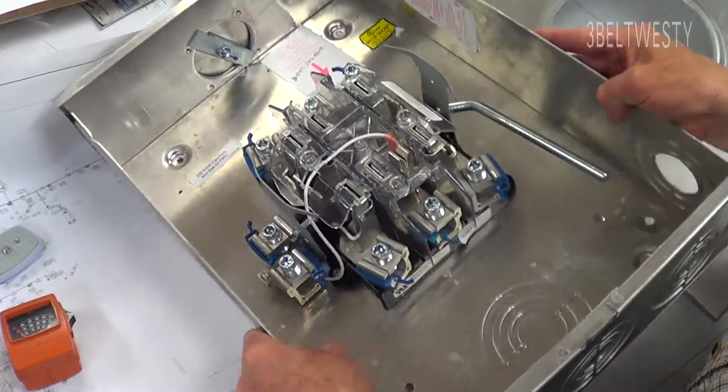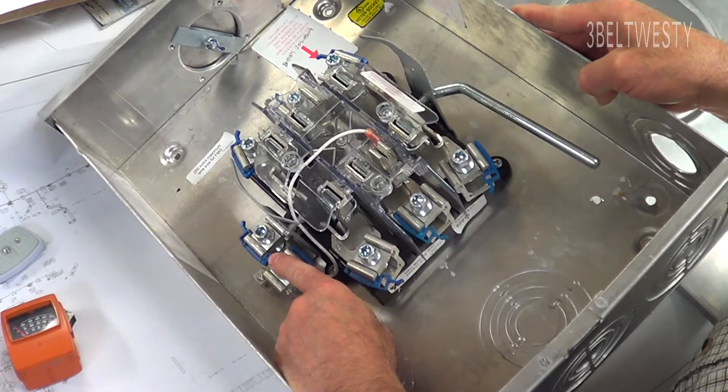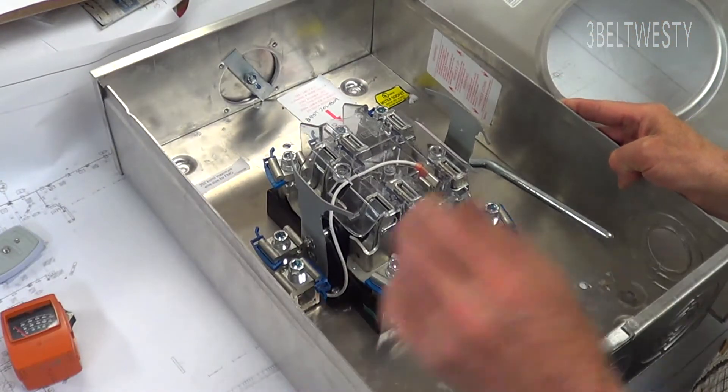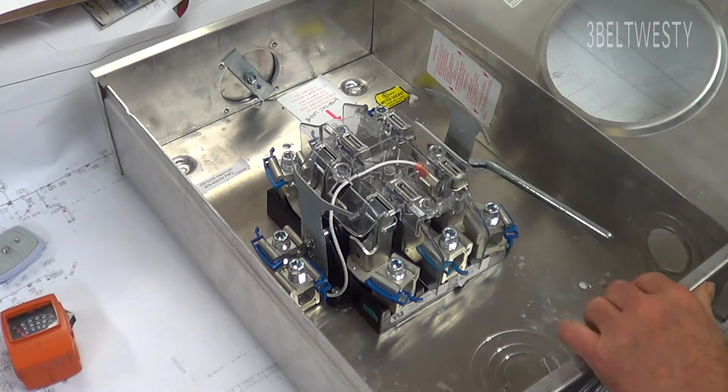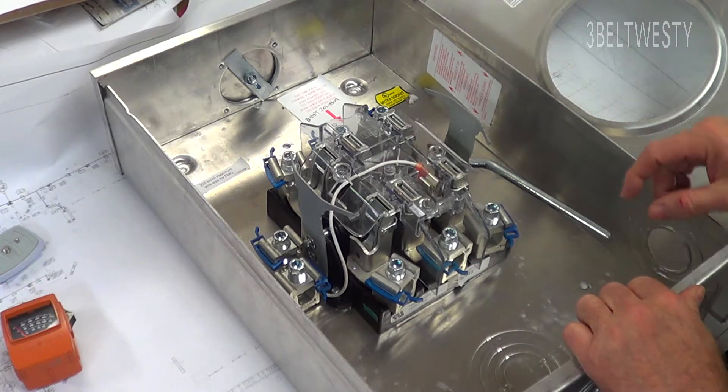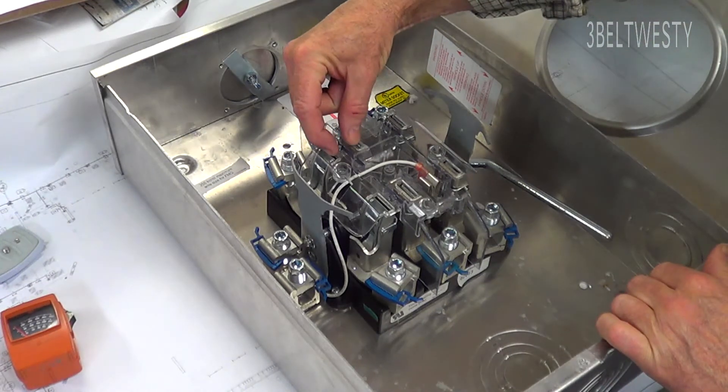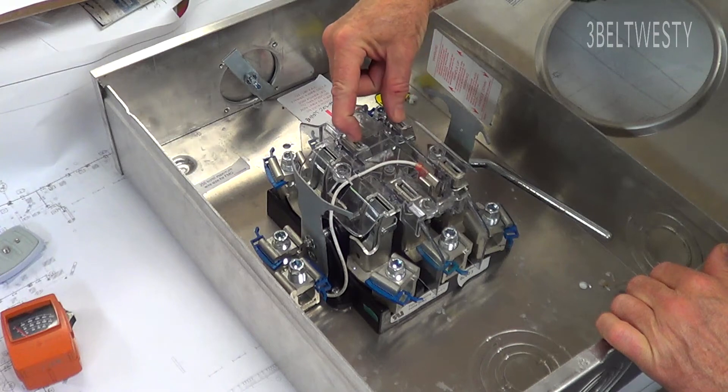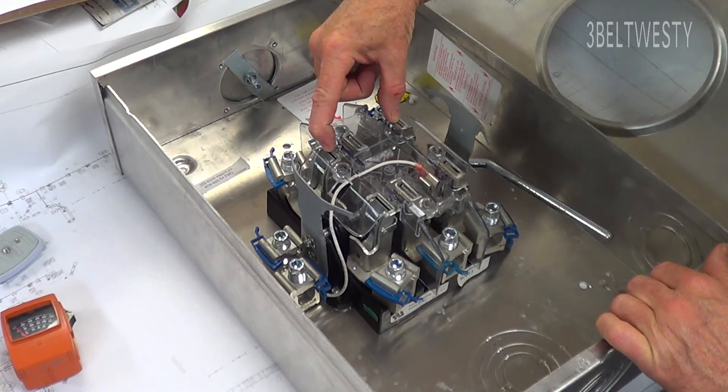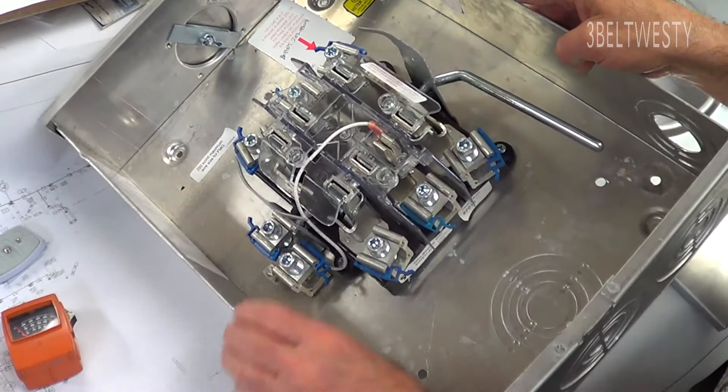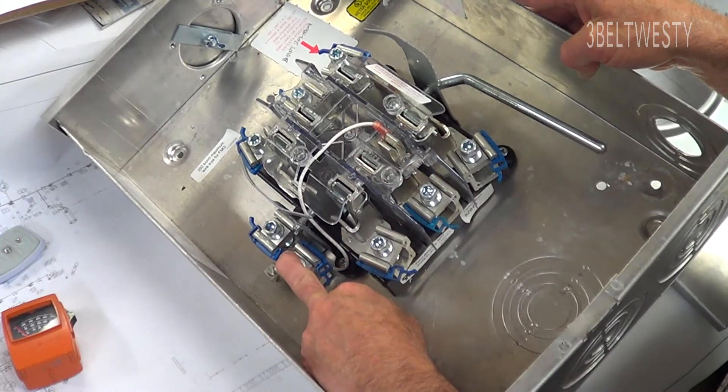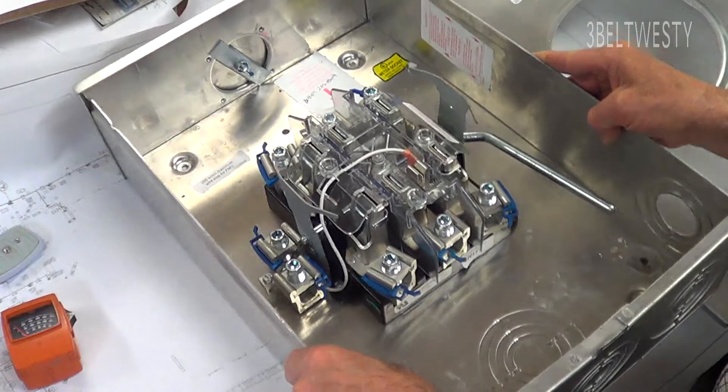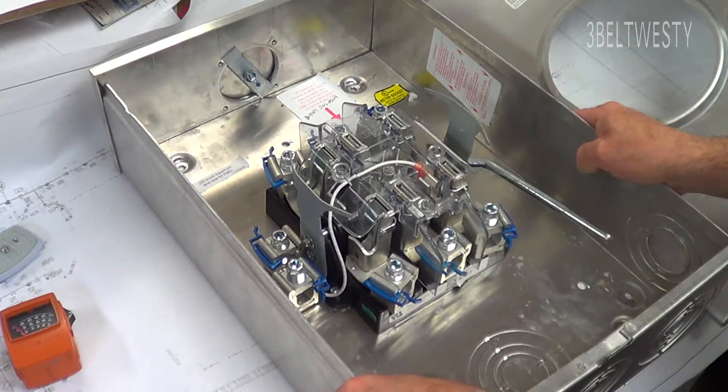Of course this is the neutral. Another configuration that's used is a higher voltage configuration where you have 277/480. That's where you've got 480 volts across here, 480 across here, 480 across here, and then you have 277 volts between each one of these three hots to the neutral.